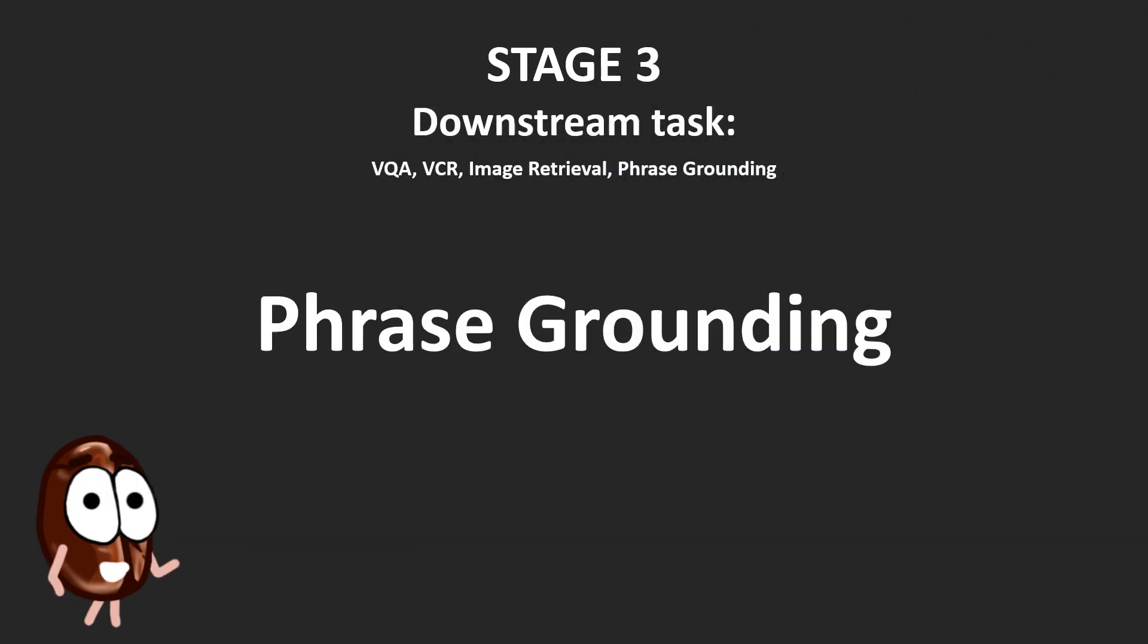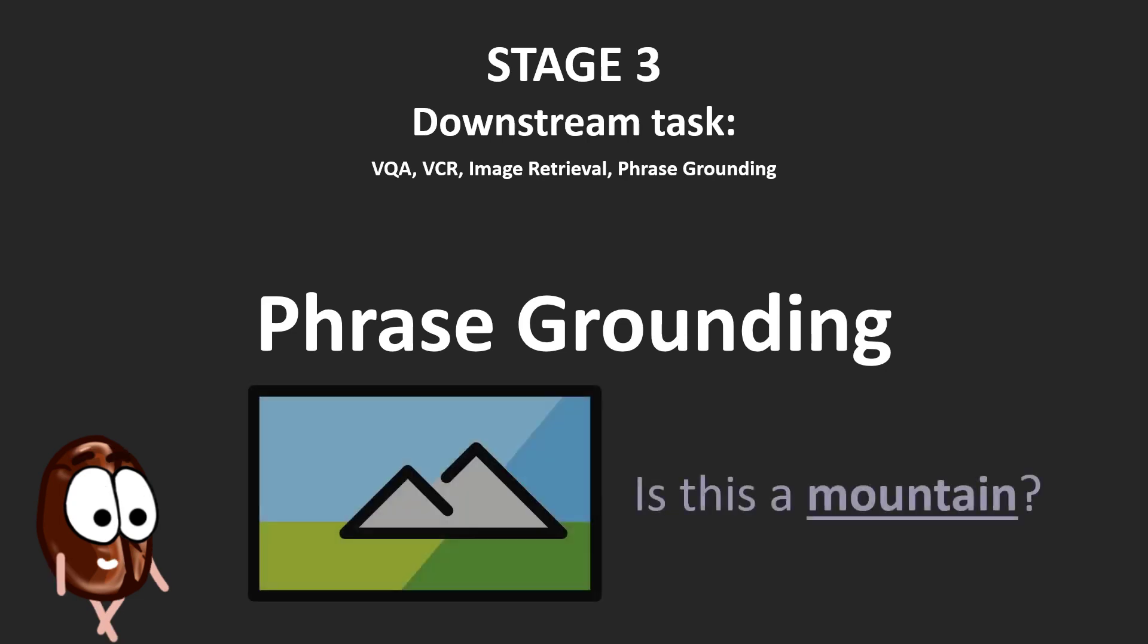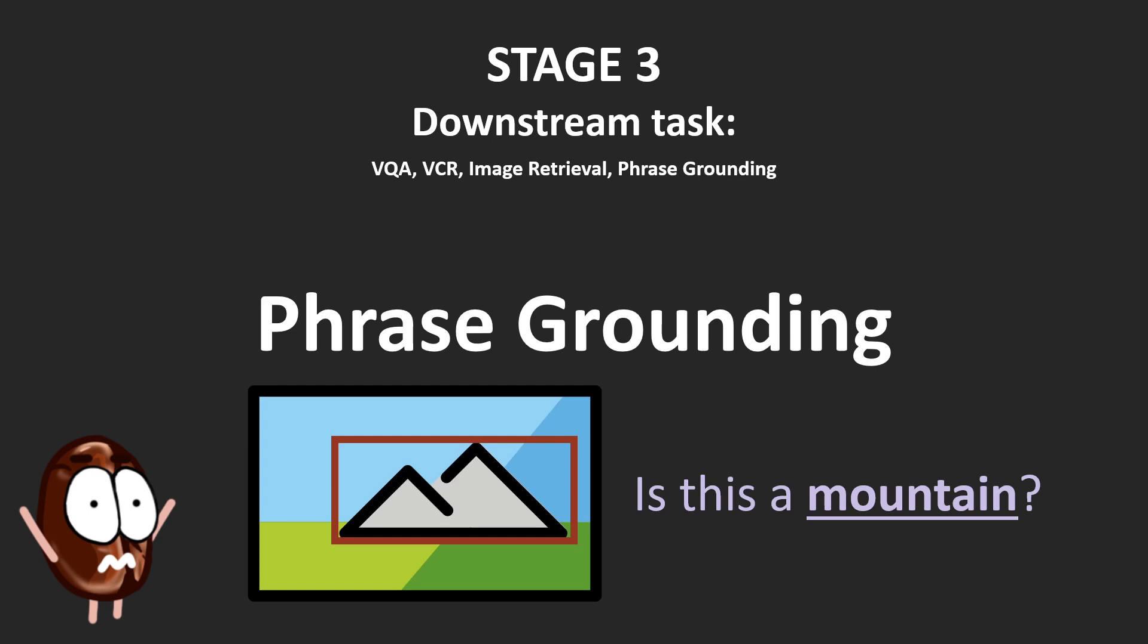Phrase grounding is a more fine-grained task, but also perfect for Wilbert, that thanks to the co-attention layers learns relationships between image regions and words, because here in this task, given a phrase in the caption, like mountain, the system has to identify the region that this phrase refers to. And yes, again, state of the art for Wilbert.